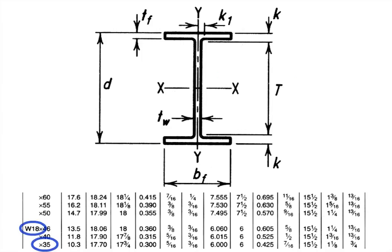The designation W18 by 35 would indicate a W shape. The 18 indicates the depth is approximately 18 inches. The actual depth is 17.7 inches. The 35 indicates the weight per foot in pounds.